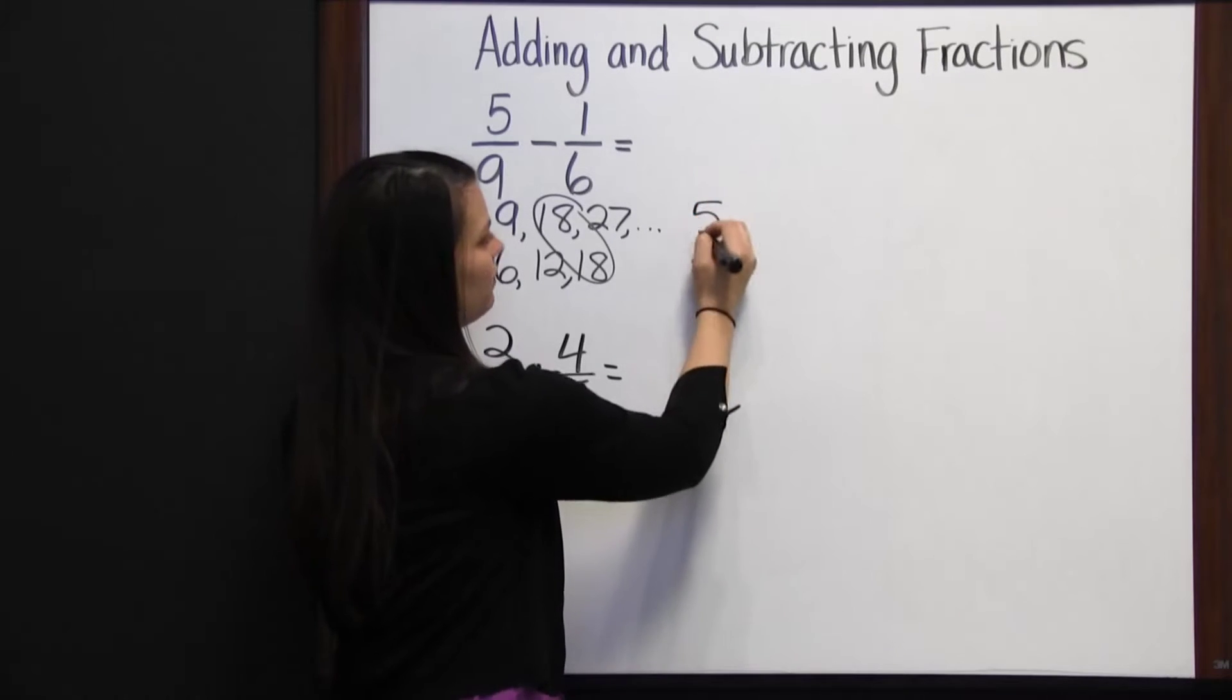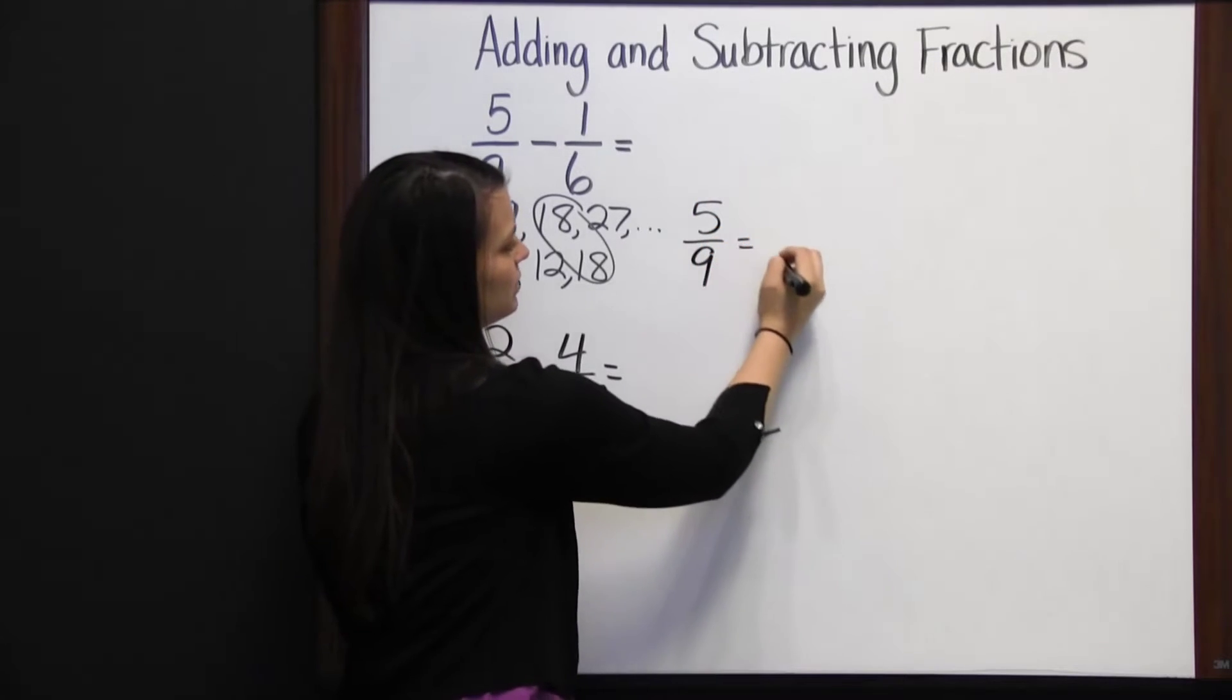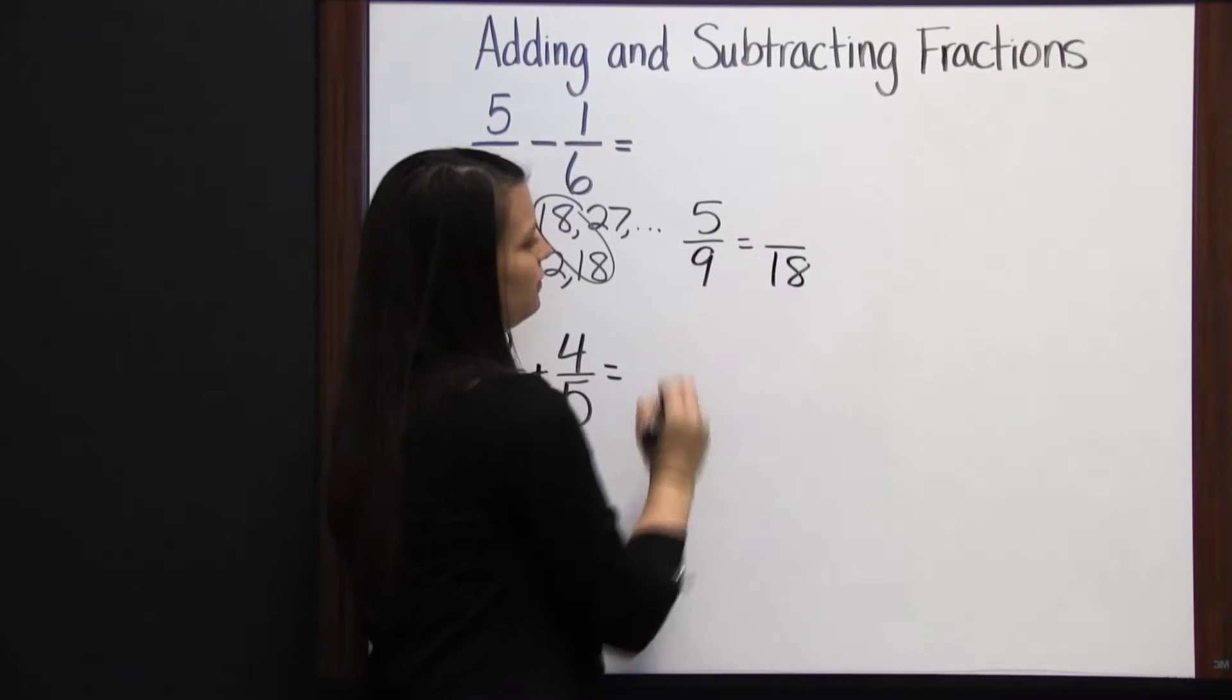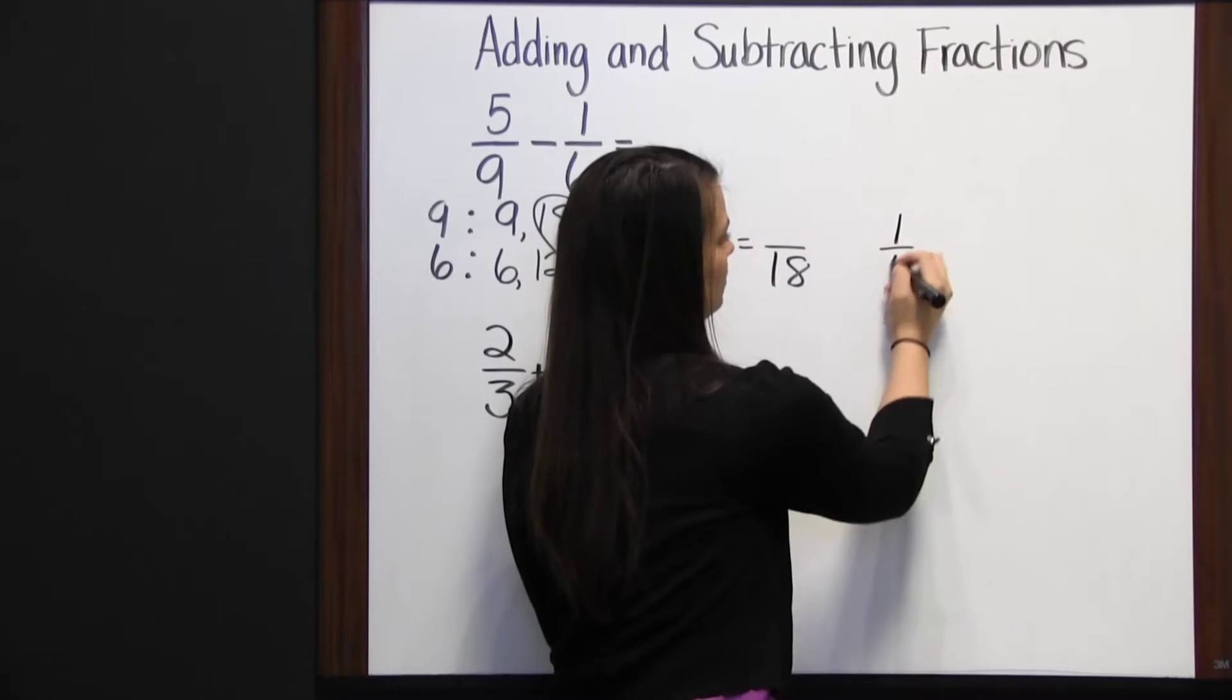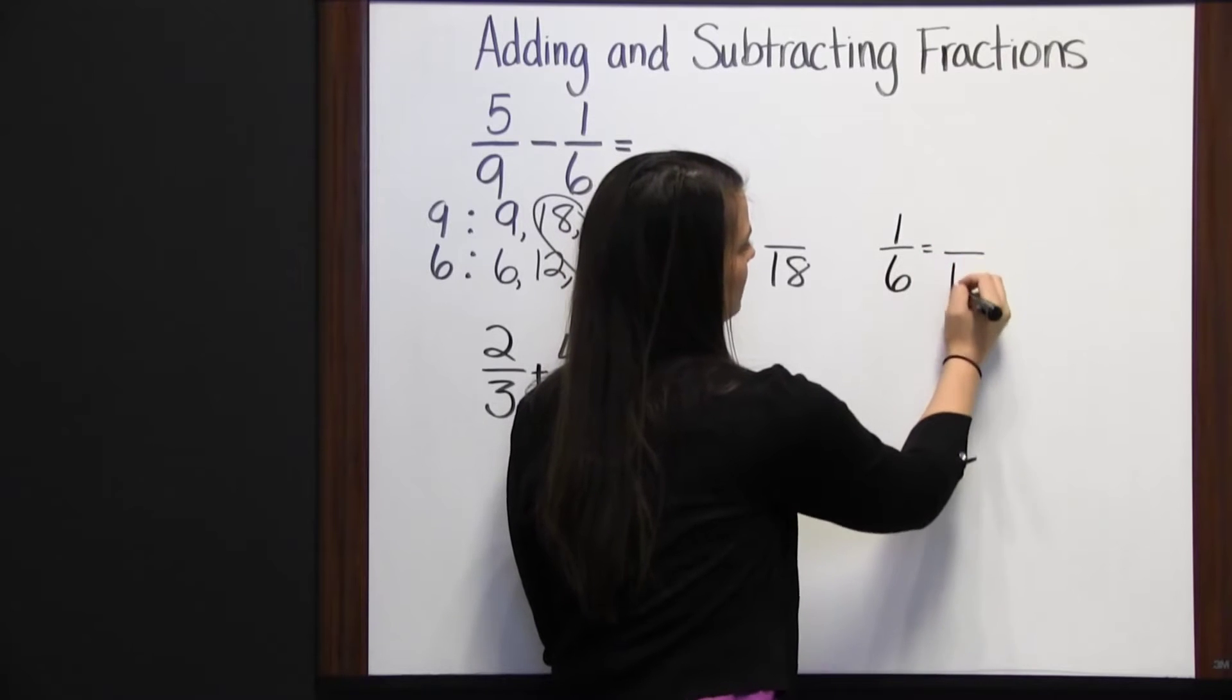So we're going to change both of our fractions, five-ninths to something over eighteen, and one-sixth to something over eighteen.